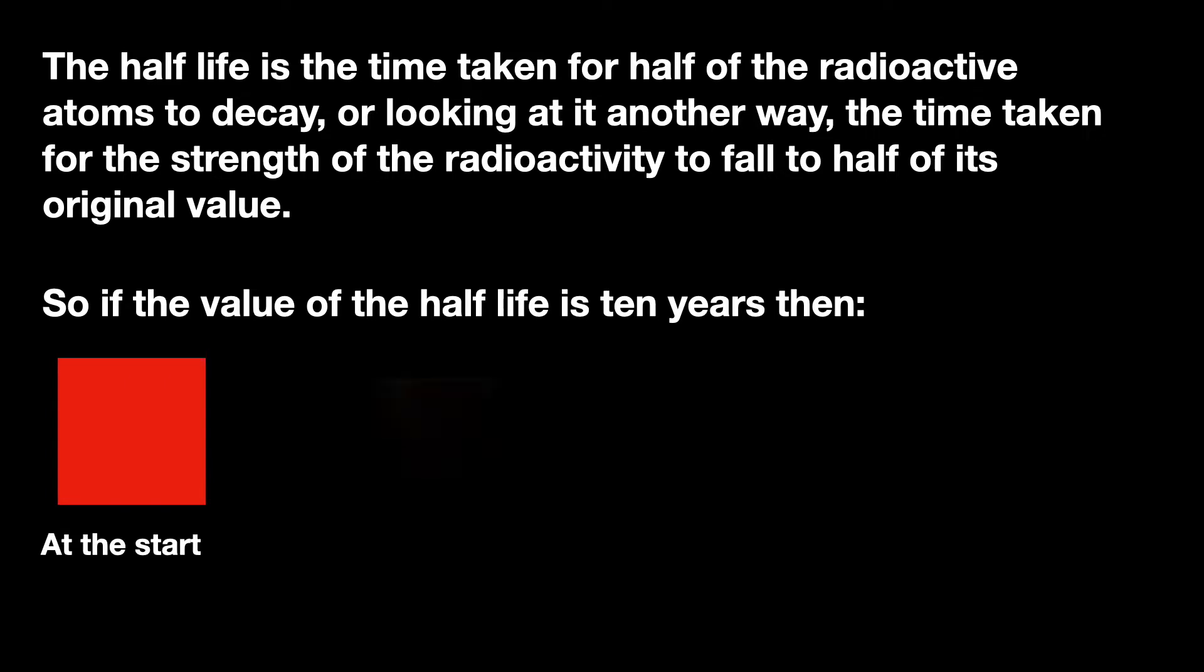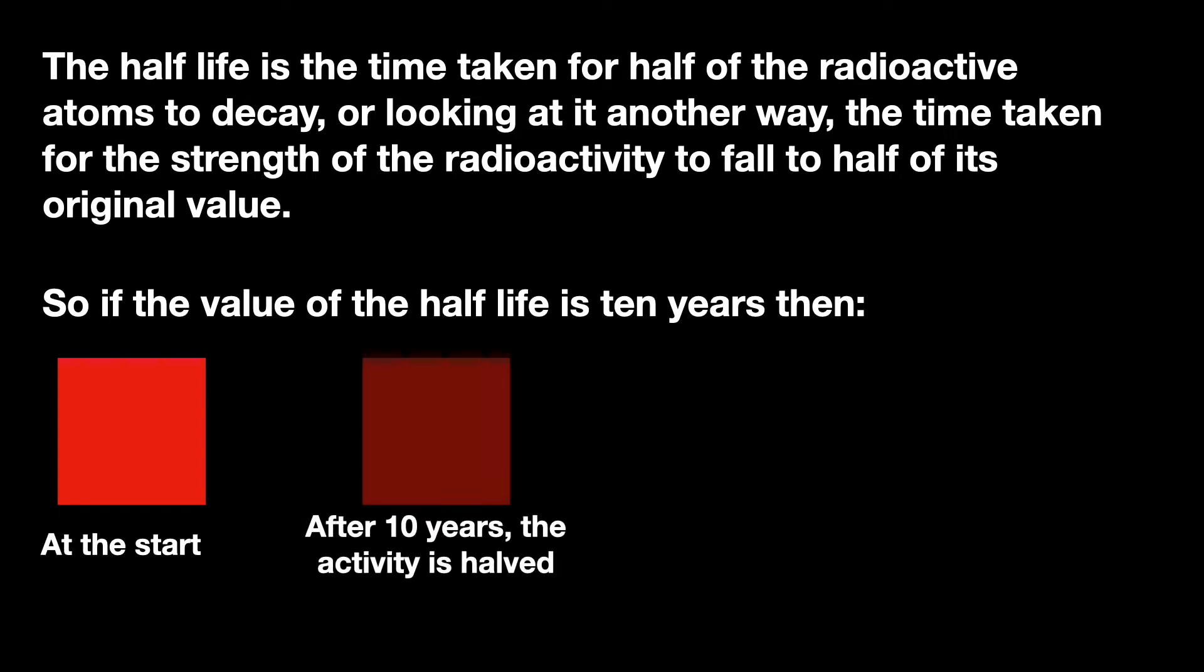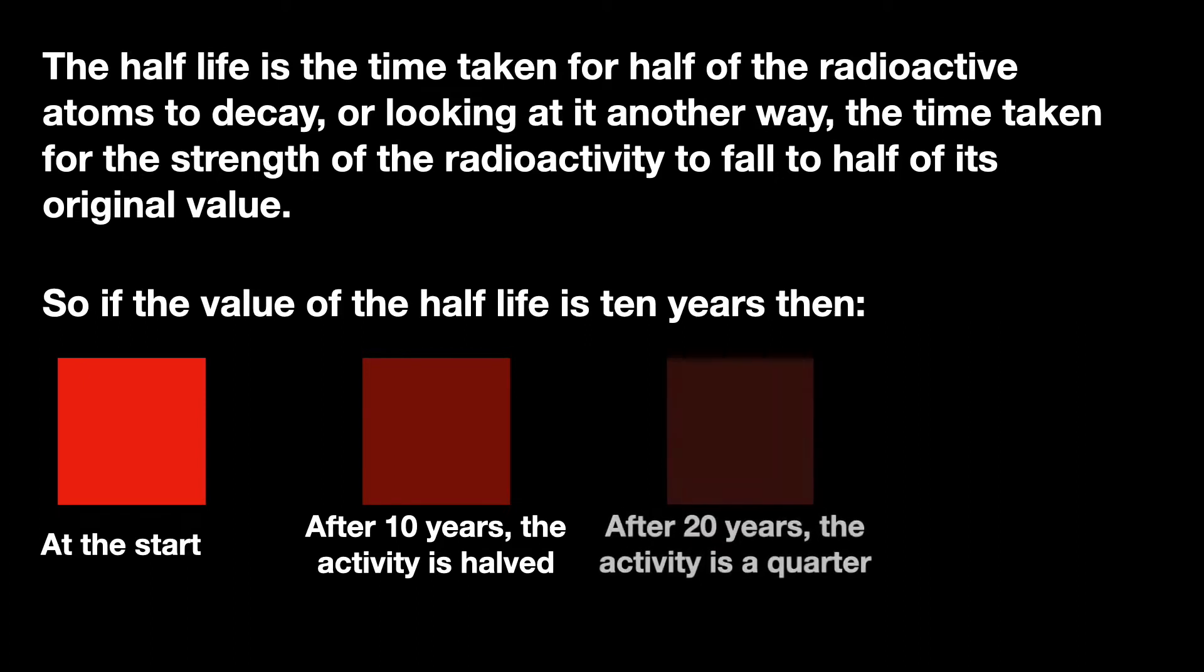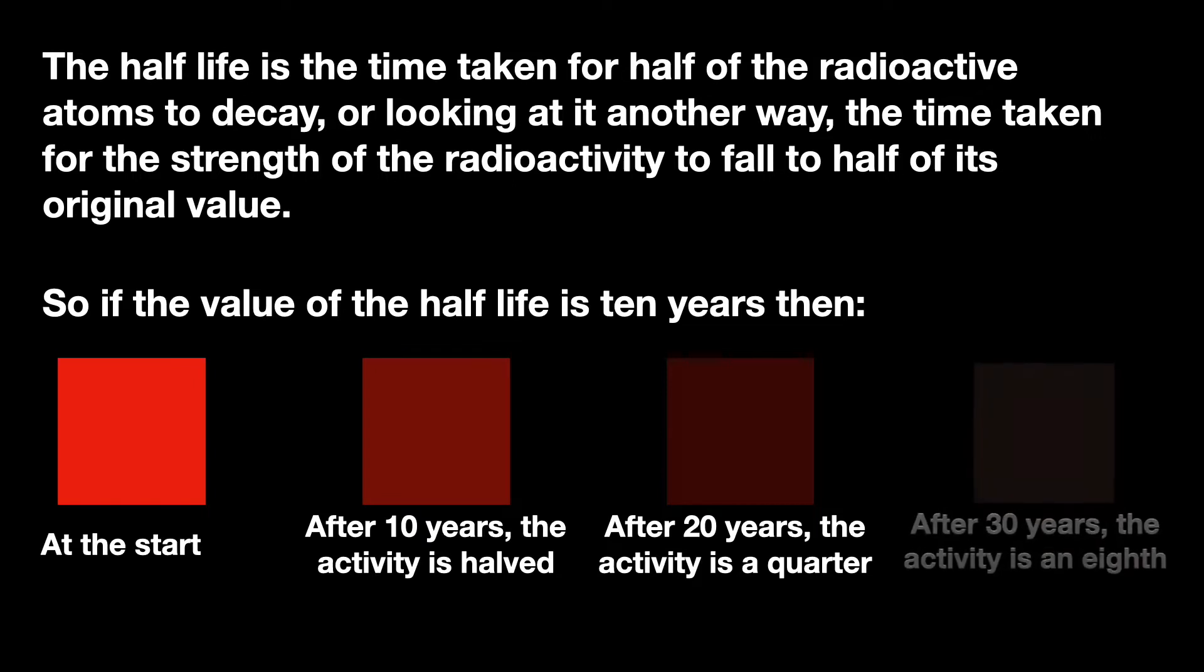So if the value of the half-life was 10 years, then after 10 years the activity would be halved. After another 10 years, 20 years, the activity is halved again to a quarter, and after 30 years the activity is halved again to an eighth.